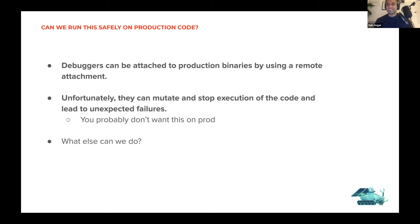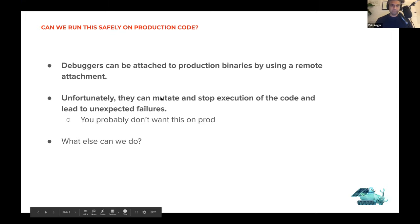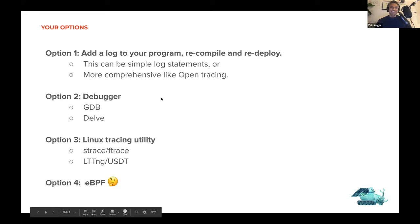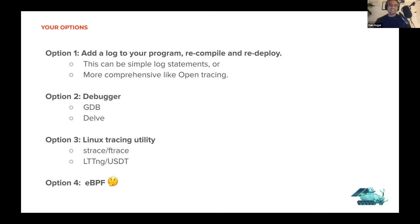We really want to get debugger functionality in production software so we can actually reproduce problems in the environment where they occur, but we don't want to redeploy and recompile all our code. So I went through and enumerated a few options — this is probably not a comprehensive list, but it covers most of the things you can do.